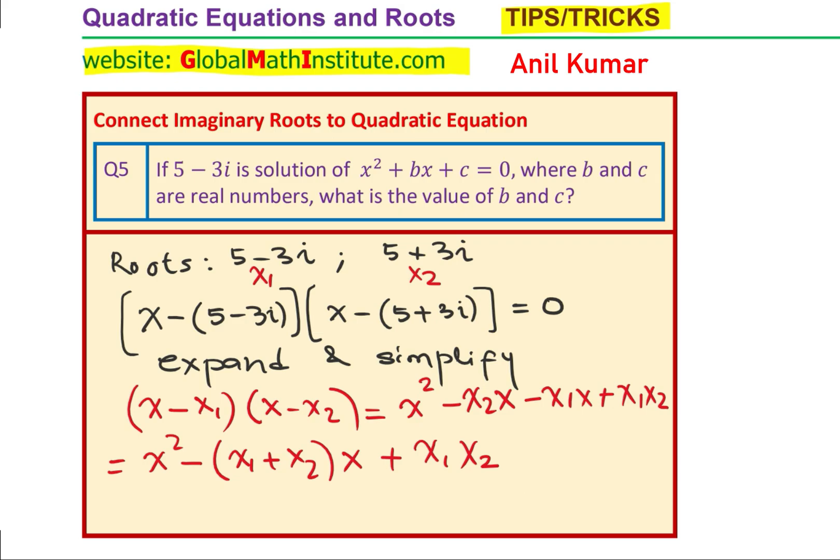So, what do you notice here is that the coefficient of x which you are looking for is minus b. And the product is basically c. If you compare with the equation, that is what you get. So, basically, we can summarize this as minus b equals to sum, and c as the product of roots. So, that gives you a shortcut method.